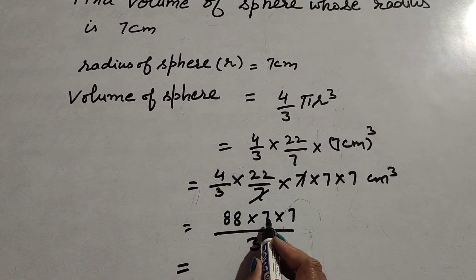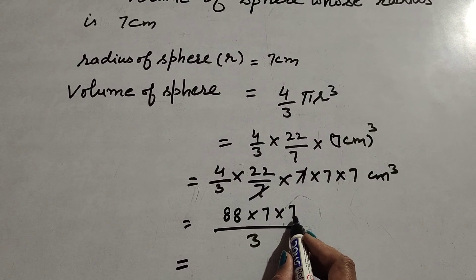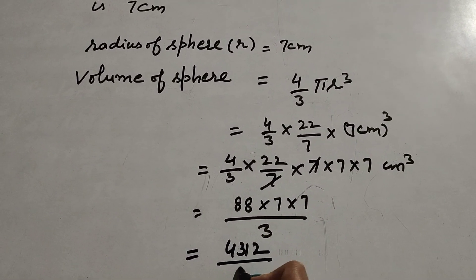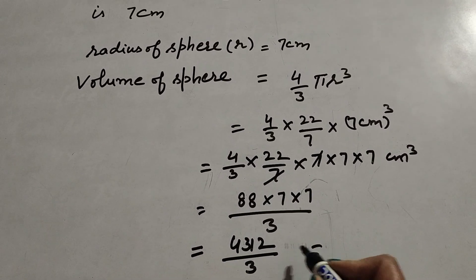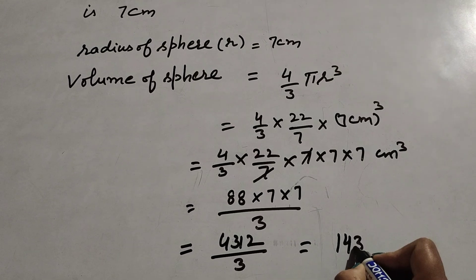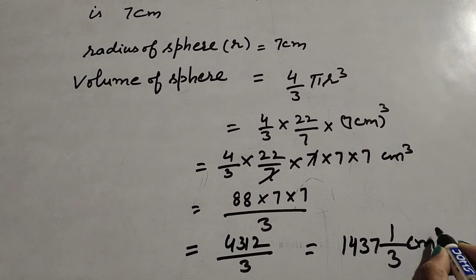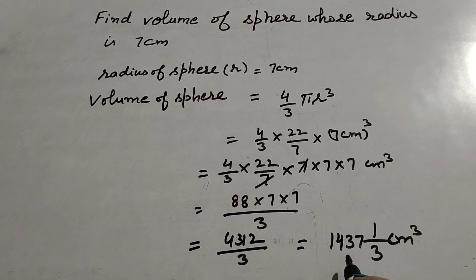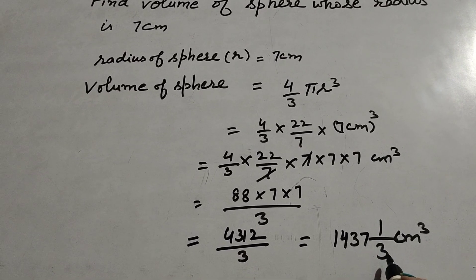616 multiplied again by 7 gives 4312 over 3. Dividing 4312 by 3 gives 1437 and 1 over 3 centimeters cubed. So the volume of the sphere equals 1437⅓ centimeters cubed.